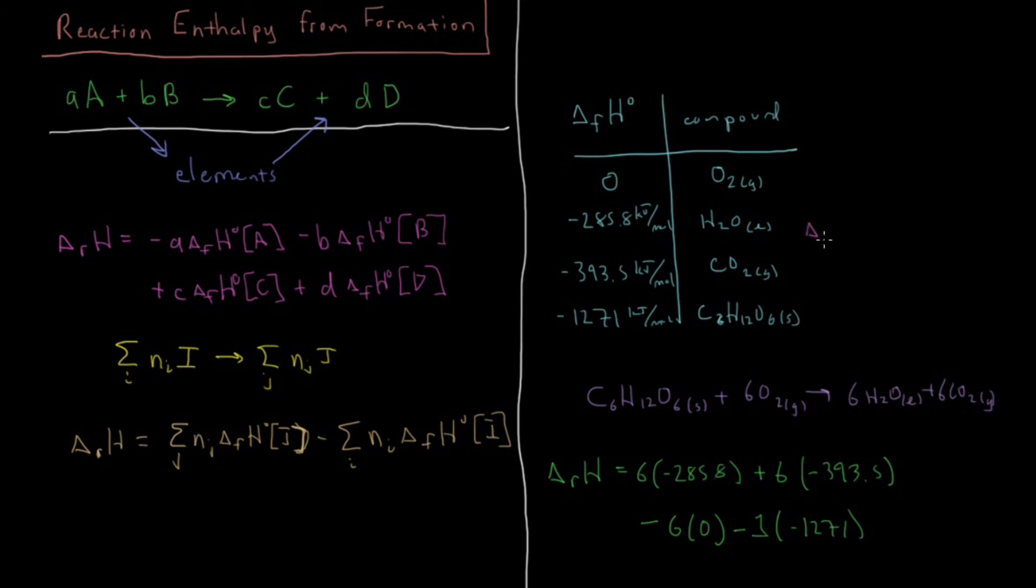Minus our 1 mole of glucose at minus 1271 enthalpy of formation for glucose. So that gives us our final result: the ΔH of reaction for this combustion of glucose is going to be very, very exothermic at minus 2805 kilojoules per mole. And we know that combustions should generally be very exothermic because they're things setting on fire.